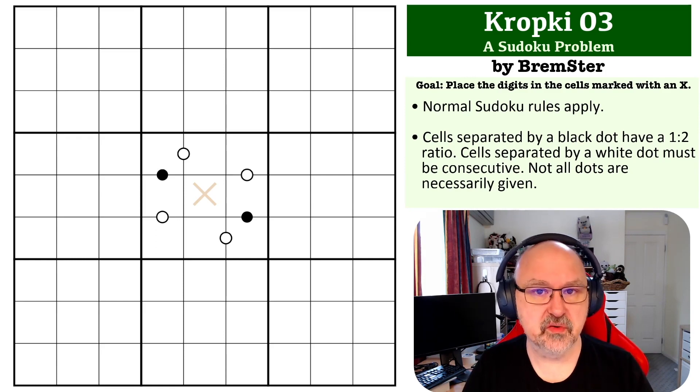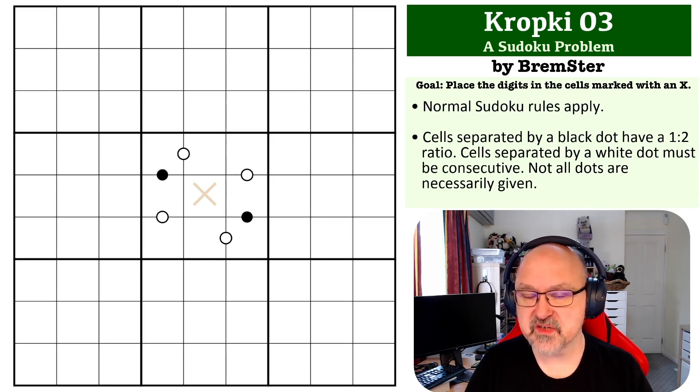So the goal of this one, of course, is to place the digit in the cell marked with an X. And the rules on this one are standard Kropki. Cells separated by a black dot must be in a one to two ratio. Cells separated by a white dot must be consecutive.